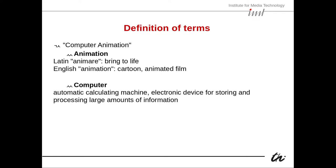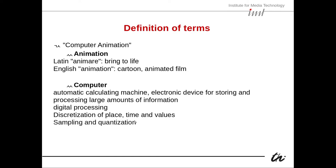In computer animation we need to store three-dimensional moving objects, which means large amounts of memory. Digital processing includes capturing and rendering videos. We also have discretization of place, time, and values — when we capture something with a camera, we have individual pixels with discrete values. We only have so many frames per second, so we need to discretize time. For that we need sampling — position in time and space — and quantization, the representation of values up to a certain step size.